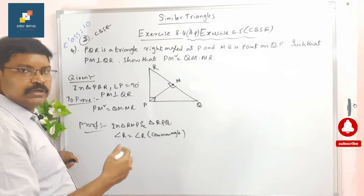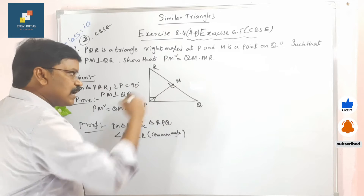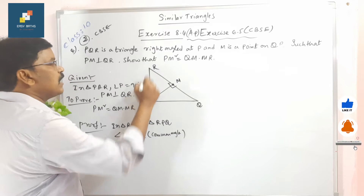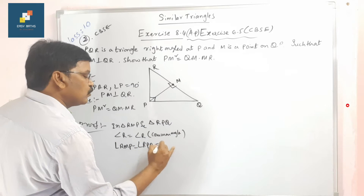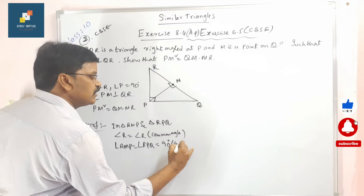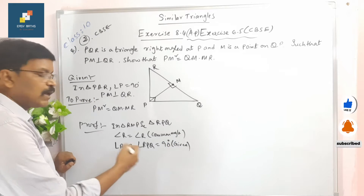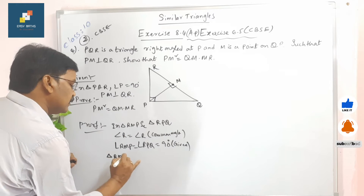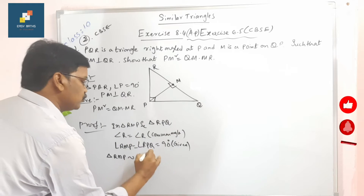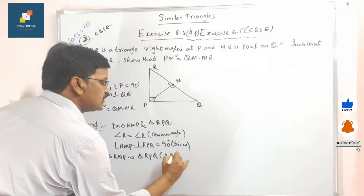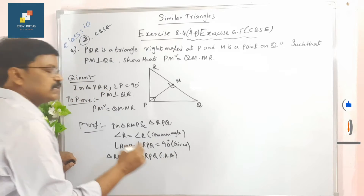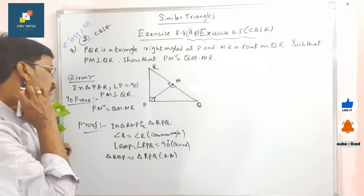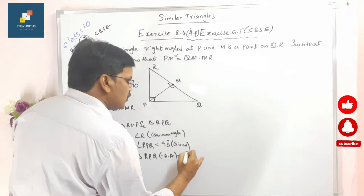Similarly, angle RMP is equal to angle RPQ — both are equal to 90 degrees, as given in the statement. Therefore, according to AA similarity, triangle RMP is similar to triangle RPQ. The reason is AA similarity theorem — since AA similarity theorem, the two triangles are similar to each other. This is equation number one.